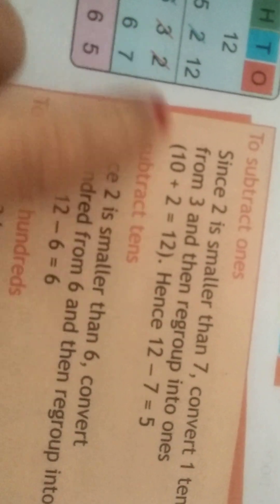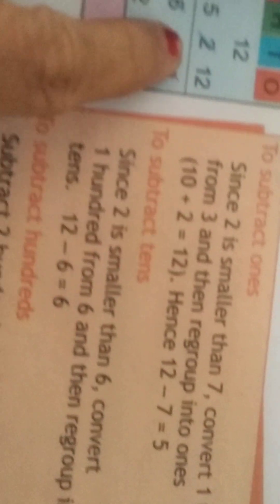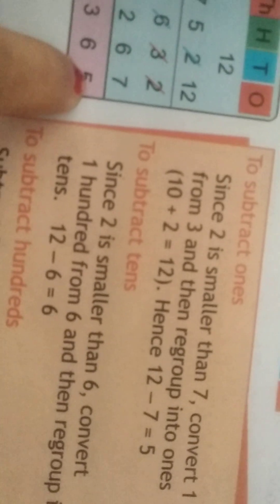10 plus 2 equals 12. We have taken 1 ten, so 10 plus 2 equals 12. 12 minus 7 is 5.